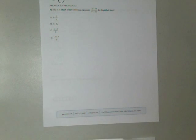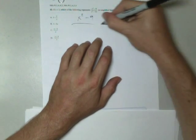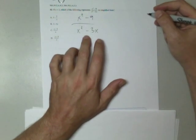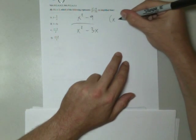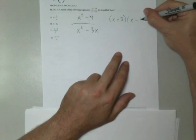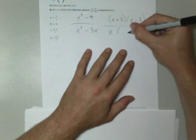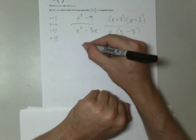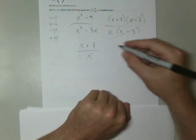If x does not equal 3, which of the following represents x² - 9 over x² - 3x? Let me rewrite this. Let's simplify this is what it wants. Well, x² - 9 is a difference of squares. Factors to (x + 3)(x - 3). Factor an x from the denominator and I get x(x - 3). This cancels and I get (x + 3)/x, which is choice D.